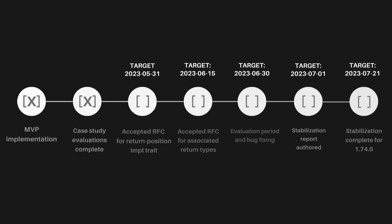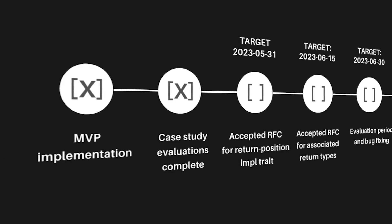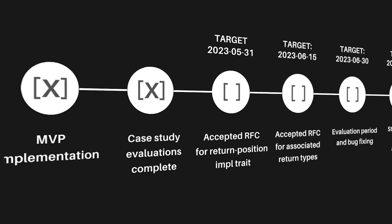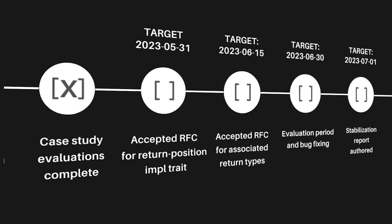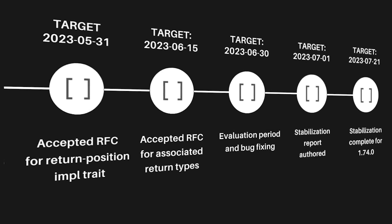To ship this feature, there are several key milestones that need to be hit. The team has already completed an MVP implementation in nightly Rust and has tested it inside 5 different code bases, including the AWS SDK and an internal tool at Microsoft, which interacts with low-level hardware resources. The remaining work involves getting a couple RFCs accepted, followed by feature evaluation and bug fixing.